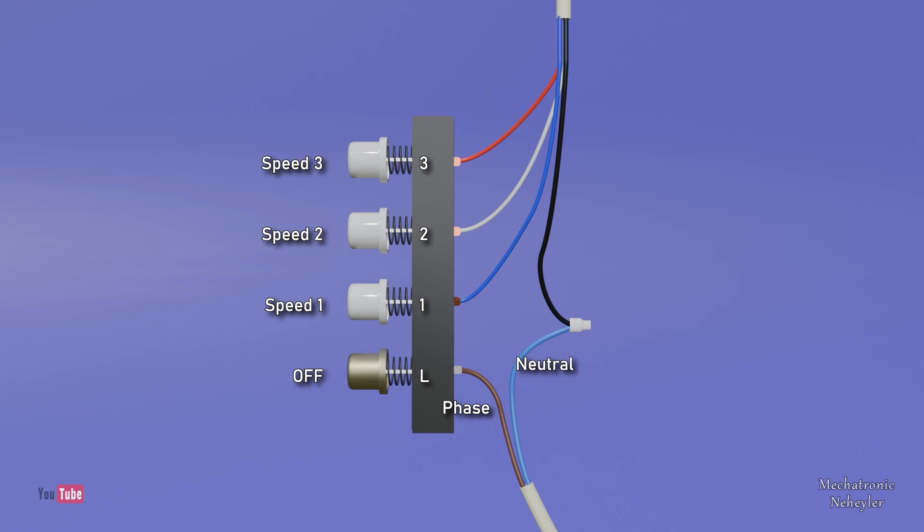The cable connection for this selector is: the phase cable that comes from the electrical network is connected to the corresponding terminal, and from each terminal of the buttons they are connected to the three motor cables. On the other hand, the neutral cable that comes from the electrical network simply goes directly to the motor.